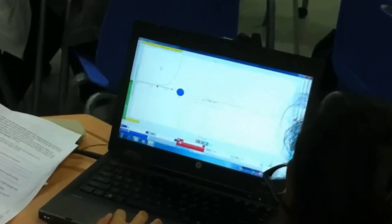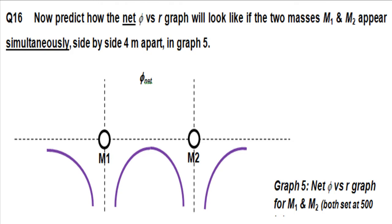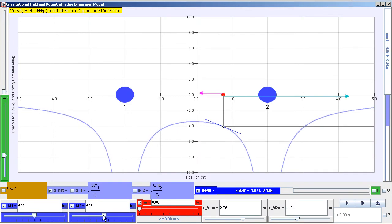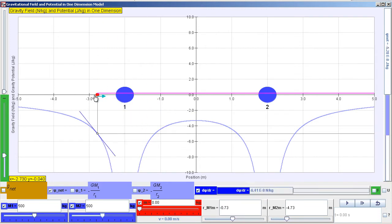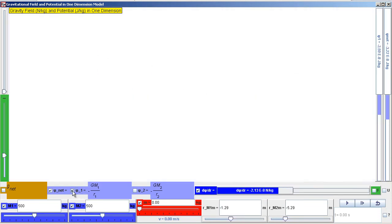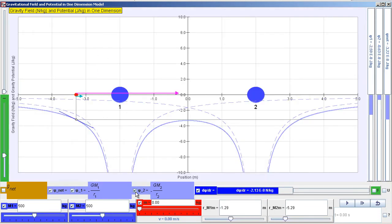For the applet you showed us just now, it actually is one of our questions. Then our teacher will draw the graph on the board. Sometimes it's not as accurate and sometimes not as nice as the applet. So if we use the applet, we can better understand and it's more efficient.